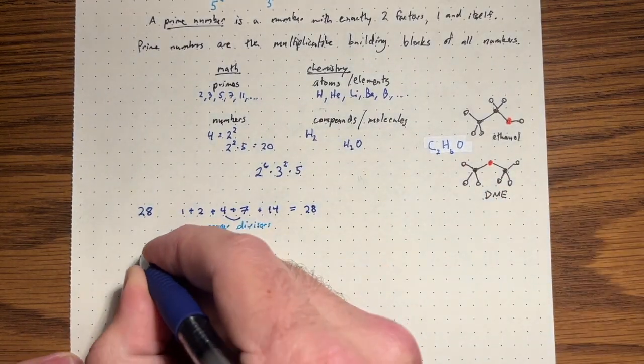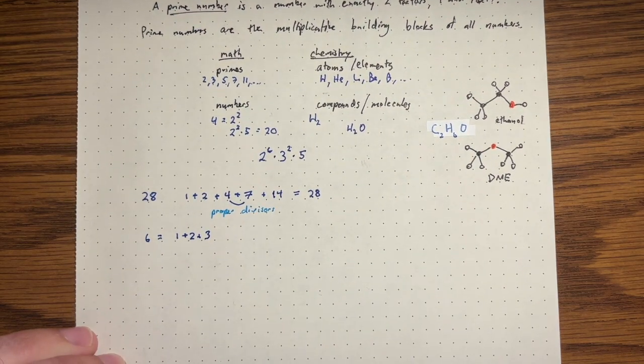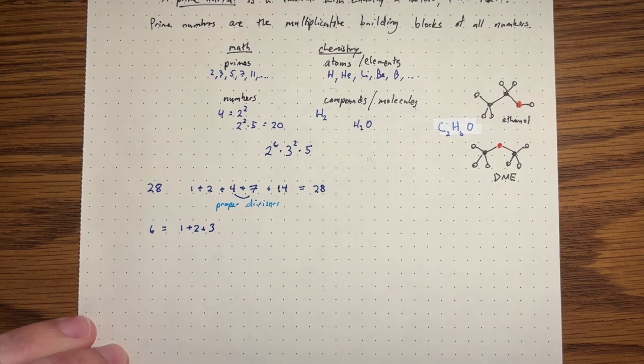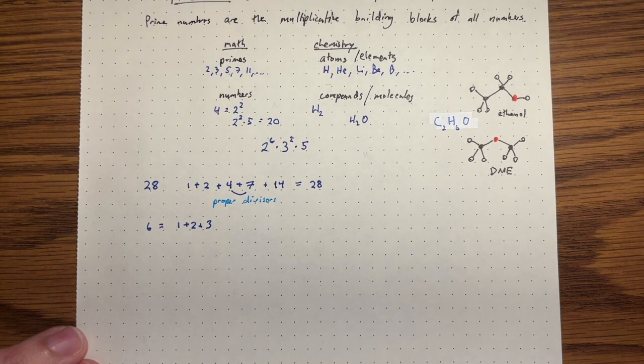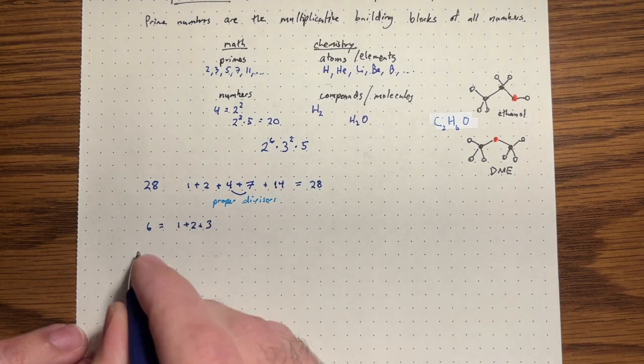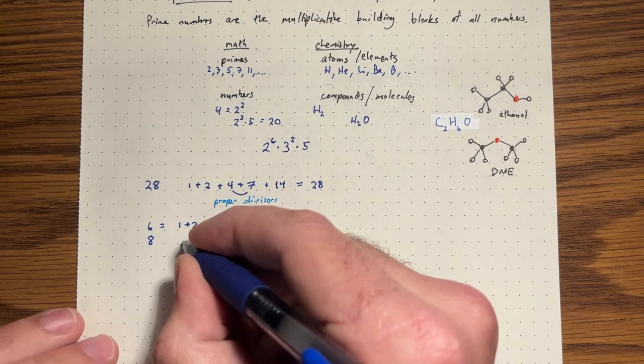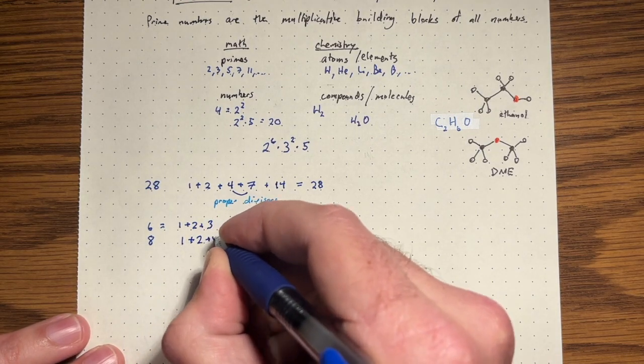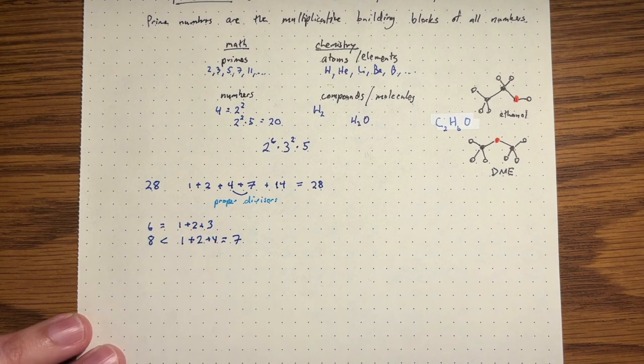These are all of its proper divisors. If you take most numbers, this is not going to happen at all. So eight, for example, is not one plus two plus four, which is seven. So eight is larger than seven. If we take number 12, this is one that has a lot of divisors. One plus two plus three plus four plus six, that's it. That's going to be 16. That's bigger than 12.